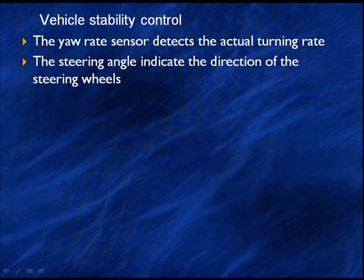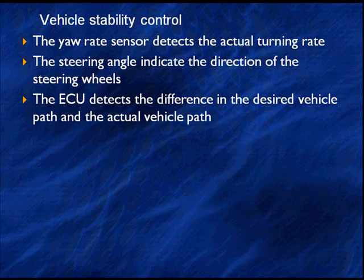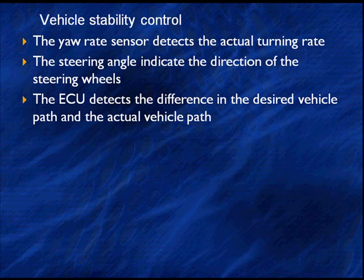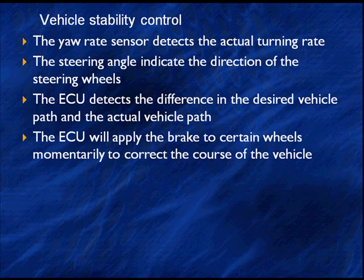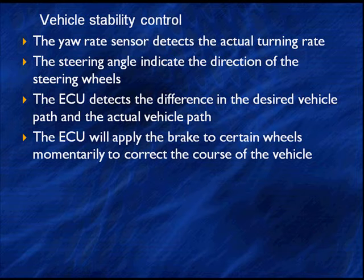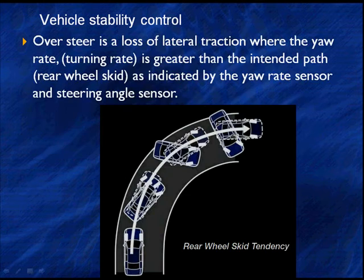The yaw rate sensor detects the actual turning rate, while the steering angle indicates the direction where the motorist wants to go. If the DCCM detects a difference in the desired vehicle path and the actual vehicle path, it's going to start taking action. It's going to apply brakes to certain wheels momentarily to correct the course of the vehicle — not long-term, not locking them up, just a momentary application of the brakes on specific wheels.